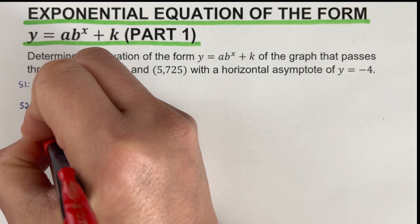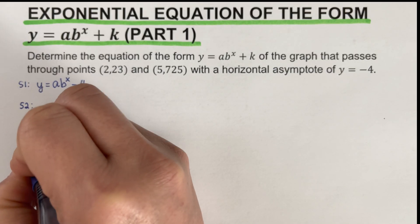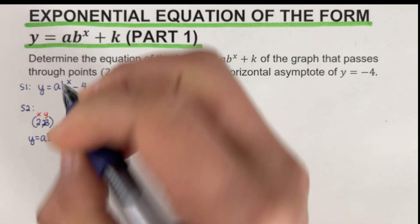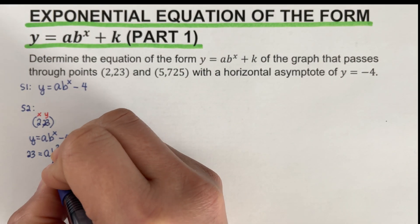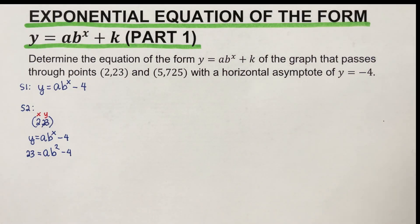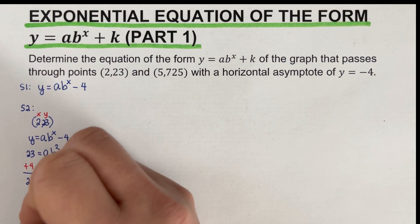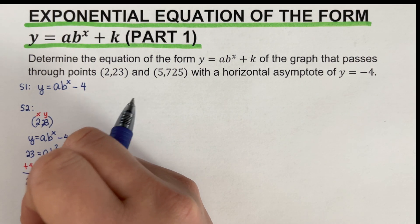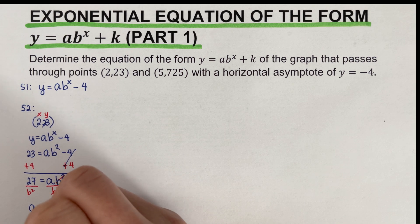The first number in the ordered pair is x and the second is y. Plugging into y equals a·b^x minus 4: we get 23 equals a·b² minus 4. Adding 4 to both sides gives 27 equals a·b². Dividing both sides by b² gives a equals 27 over b².